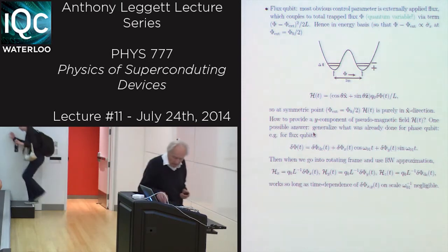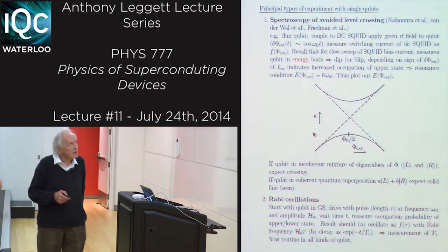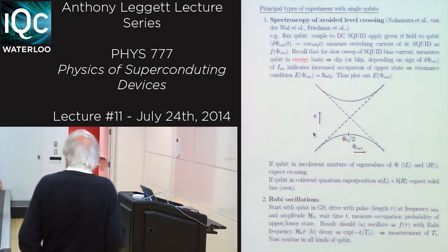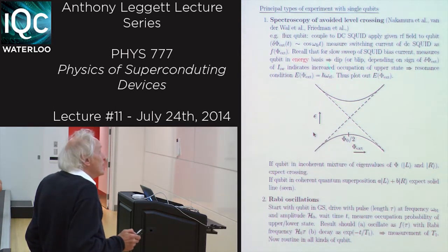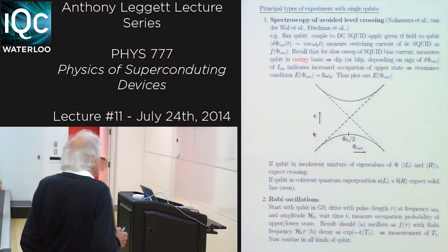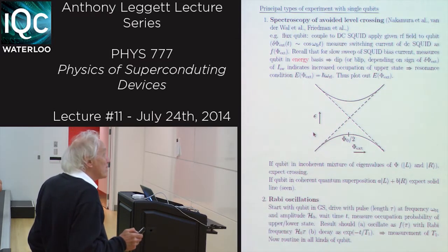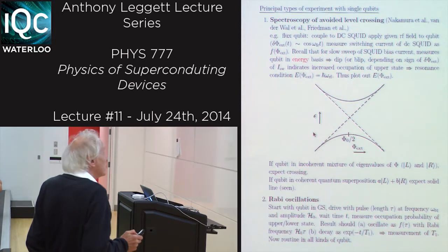Let me just now briefly review the principal types of experiment which have been done with single qubits. The very earliest experiments done in 1999 or 2000 were on the spectroscopy of avoided level crossings. This was done by the Nakamura group at NEC for the charge qubit and by van der Waal and Friedman for the flux qubit.